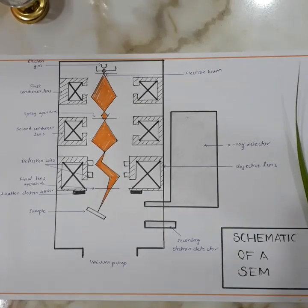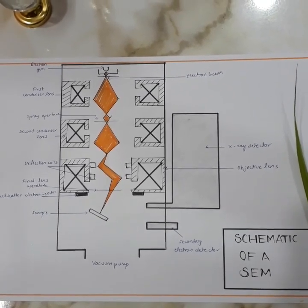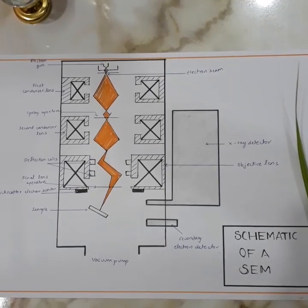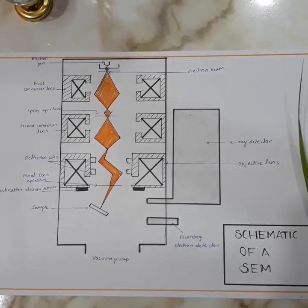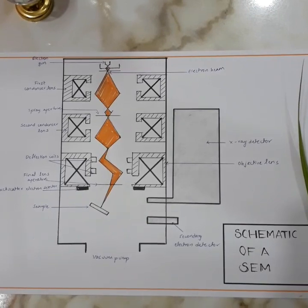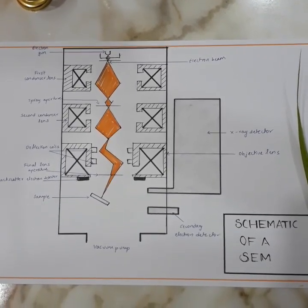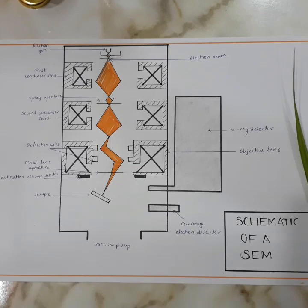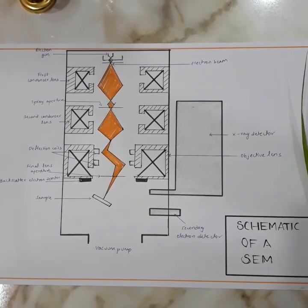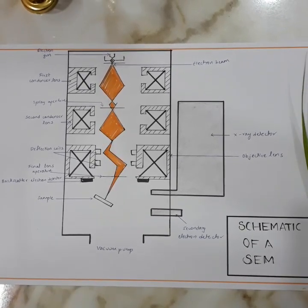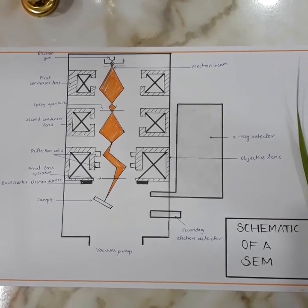This is the schematic of a SEM. SEM uses electromagnetic lenses to focus an electron beam to a sharp point and raster scan across the sample to create images by recording the secondary electrons. The electrons interact with atoms in the sample, producing various signals that contain information about the sample's surface topography and composition.